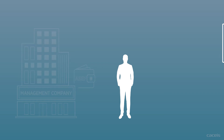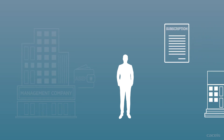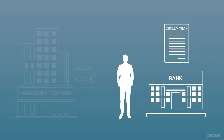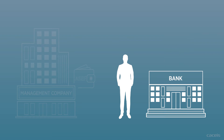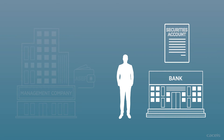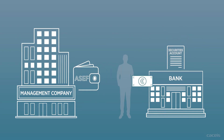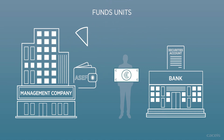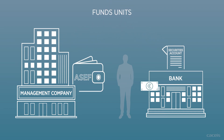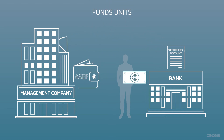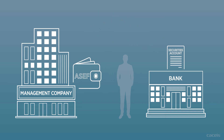To finalize his investment, John signs a subscription form with his bank in order to acquire units of the fund managed by Company Eeks. He then opens a securities account where his financial assets will be kept. The bank's role is to purchase the units of the fund managed by Company Eeks, and the fund units are recorded on John's securities account, who now owns them.